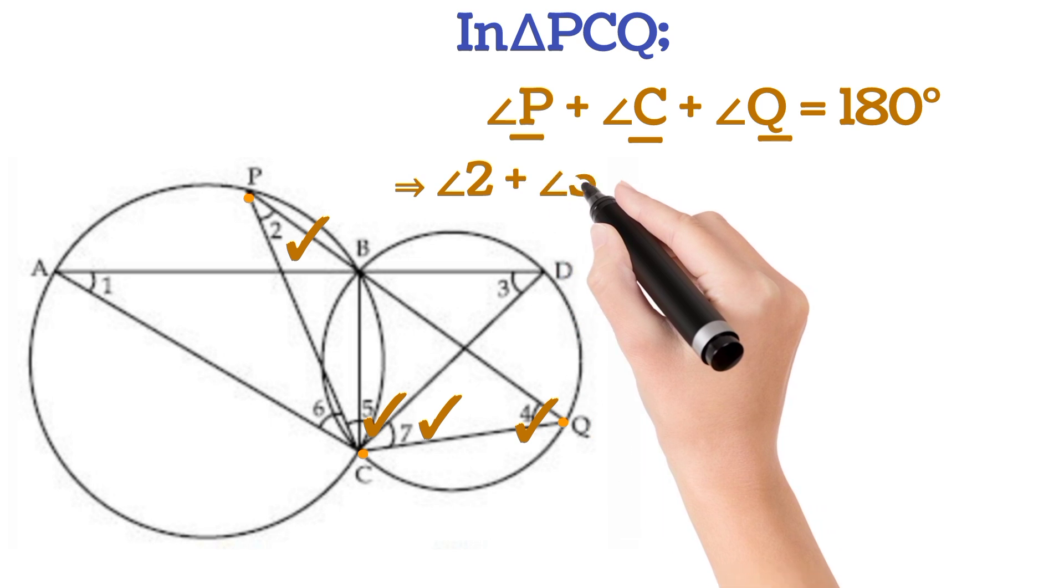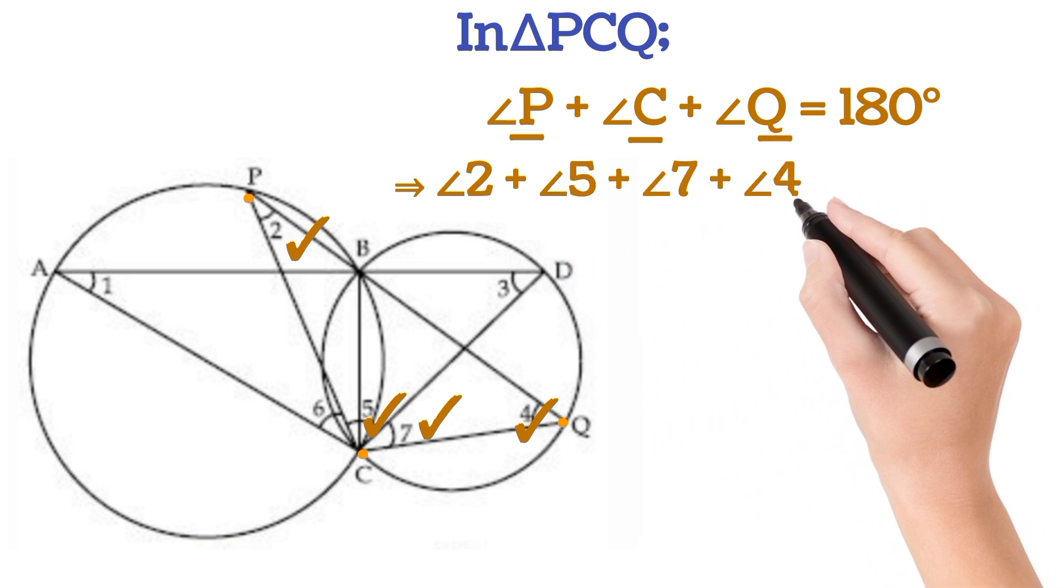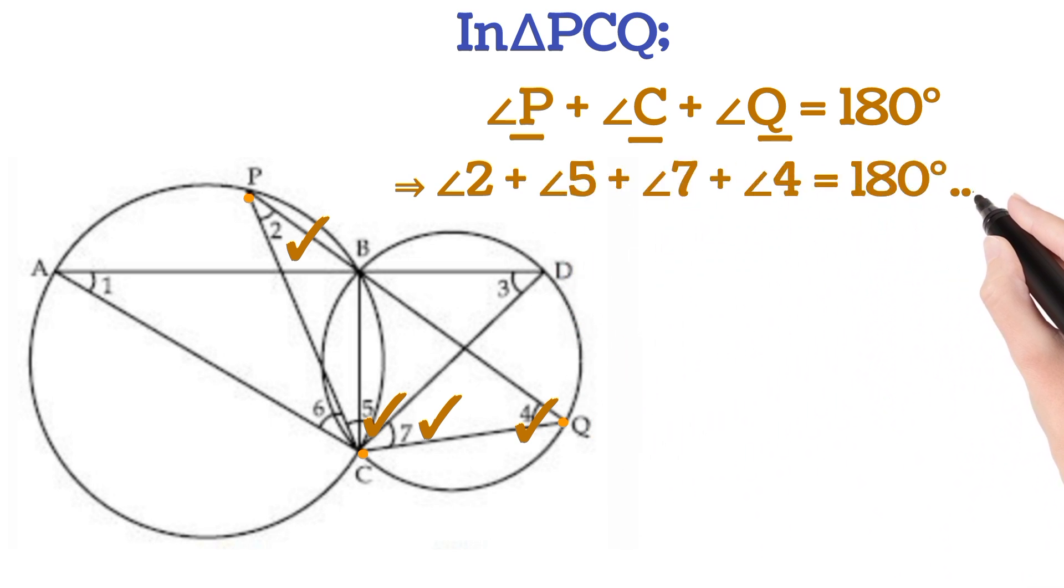On substituting the values, we will get angle 2 plus angle 5 plus angle 7 plus angle 4 is equal to 180 degrees. This is equation 2.